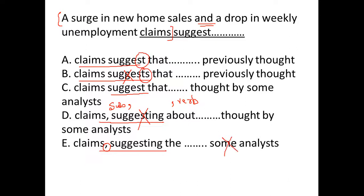Now, if you look at A and C, if you compare the last few words, it says previously thought and it says thought by some analyst. So, whenever we use done by somebody, so it's thought by somebody, this is passive construction. So, when we have active versus passive construction, active is always preferred or we say passive construction is avoidable. So, we can eliminate option C.